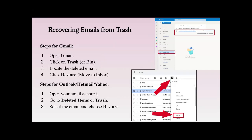How can we recover emails from the trash? For Gmail there's a set of steps and for Outlook there's a set of steps — they're both relatively similar but because they're different platforms it might be a little different. For Gmail, first open Gmail, then click on the trash bin. Once in the trash bin, locate the deleted email you want to restore, click 'Restore,' and that email will be moved back into your inbox.